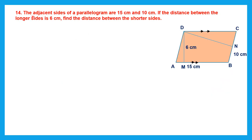Question 14: the adjacent sides of a parallelogram are 15 centimeters and 10 centimeters. Adjacent means sides next to each other, not opposite sides. This side is 15 centimeters and this side is 10 centimeters. If the distance between the longer sides is 6 centimeters, find the distance between the shorter sides — that is DN, which we have to find.